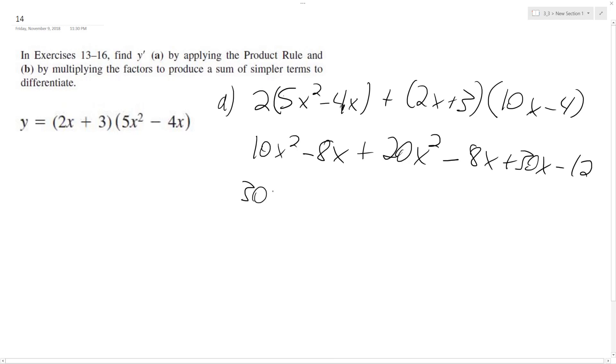Combine like terms, I end up with 30x squared minus 16, 14. Plus 34x. Oh, that's wrong.